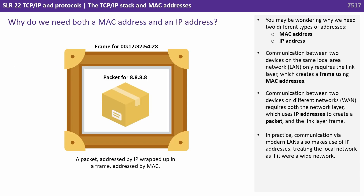So why do we need both a MAC address and an IP address? Communication between two devices on the same local area network only requires the link layer, which creates a frame using the MAC address. But communication between two devices on different networks, such as a WAN, requires both the network layer — which uses the IP address to create the packet — and the link layer.